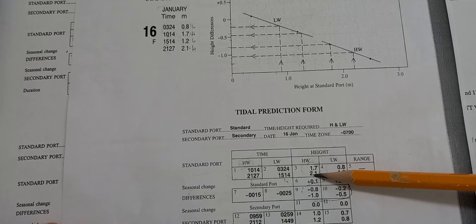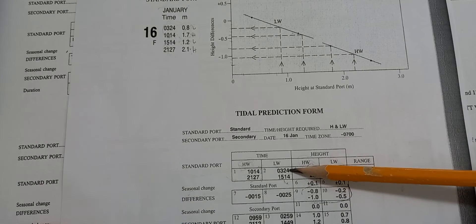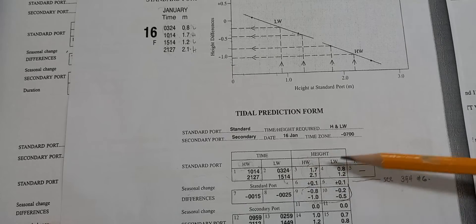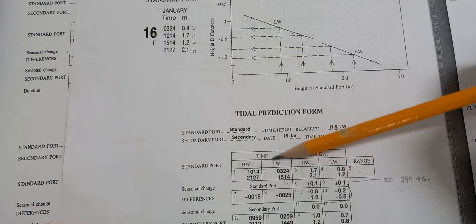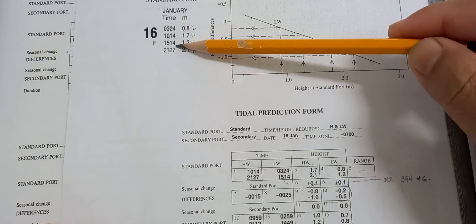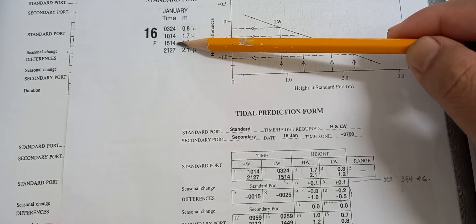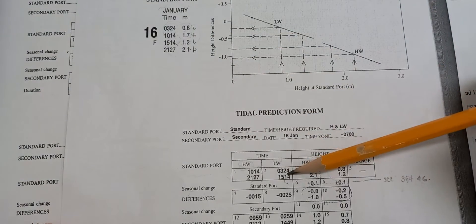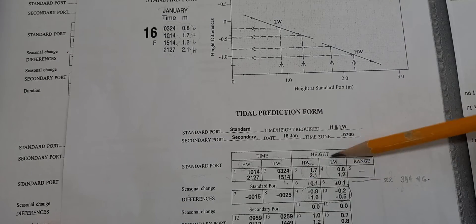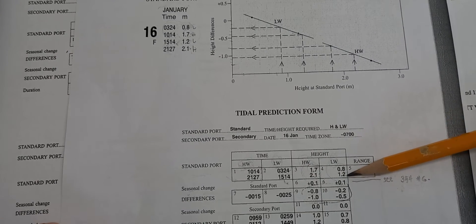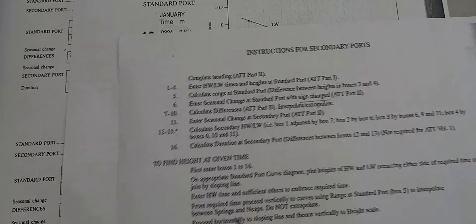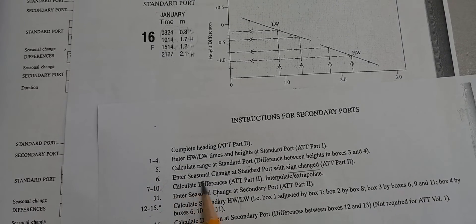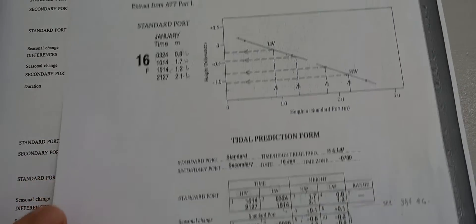At 21:27 the height is 2.1. For low water: 03:24 is equivalent to 0.8, so put that in the low water box. The next low water is 15:14, equivalent to height 1.2. So in the low water boxes: 15:14 with height 1.2. Now to fill in box six — box six means enter the seasonal change of the standard port.